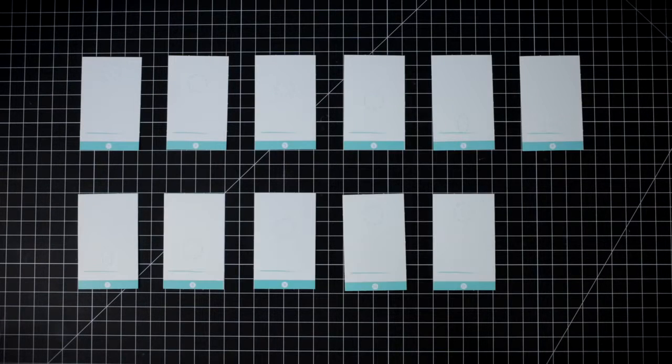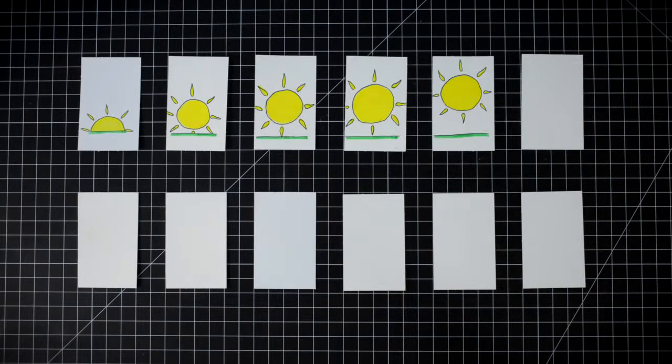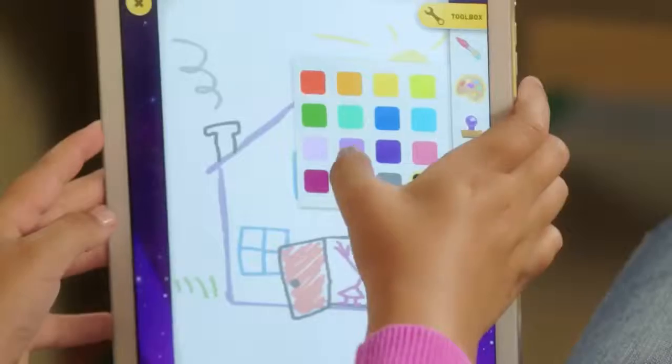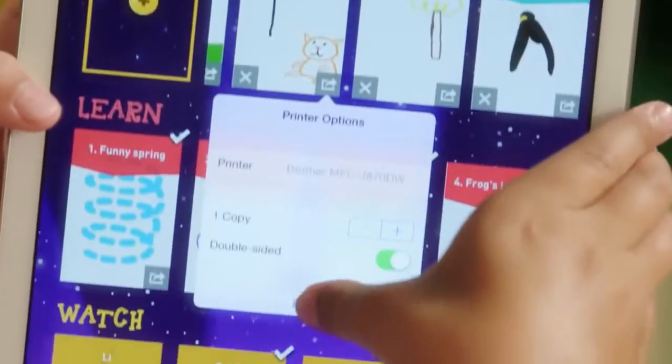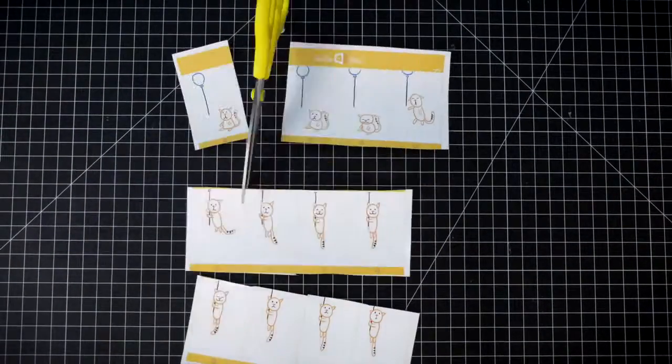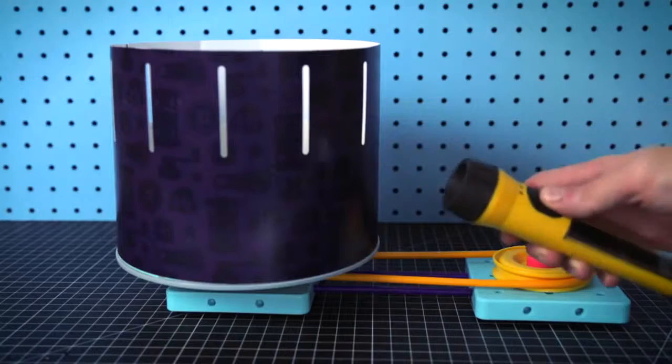Now for the fun part! Create your own 12-frame animations using stickers and movie cards from your movie machine kit, or by using the GoldieBlox and the Movie Machine app. You can even print your own animations. Once you have a 1-second movie, place each card from 1 to 12 inside the movie hoop. Lights, camera, action!